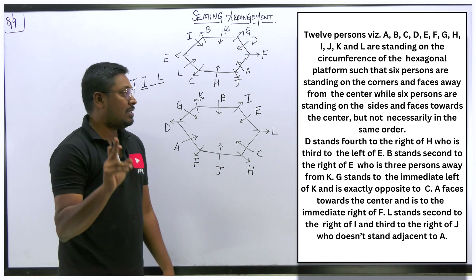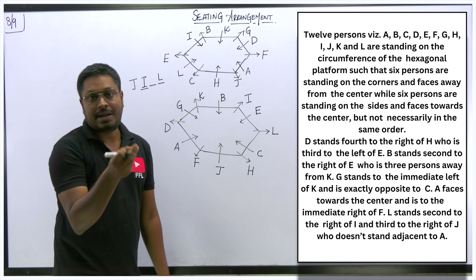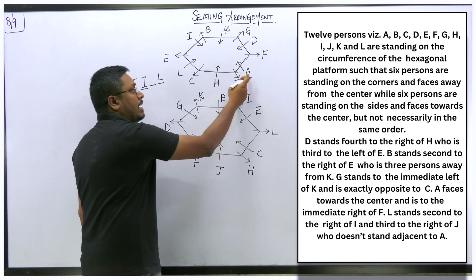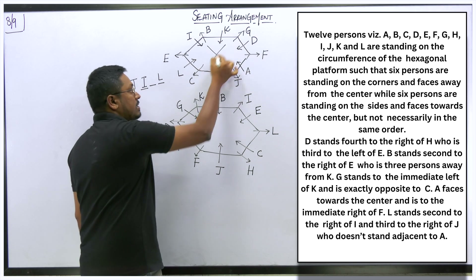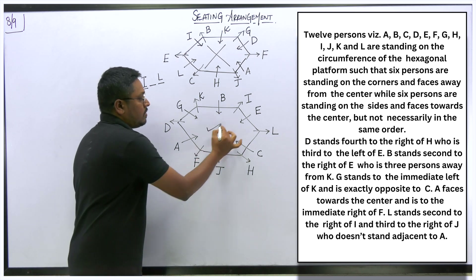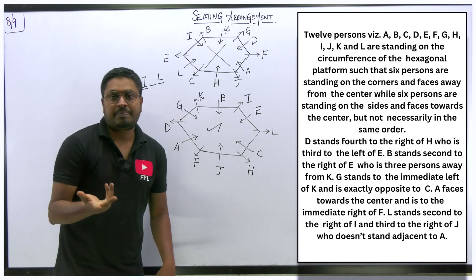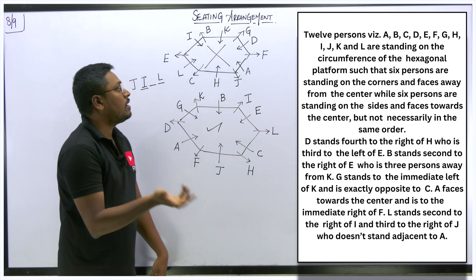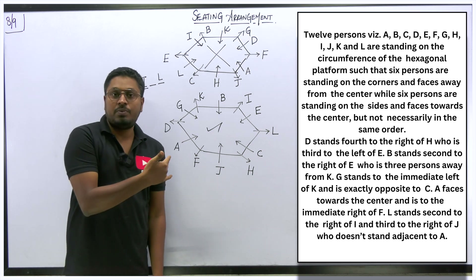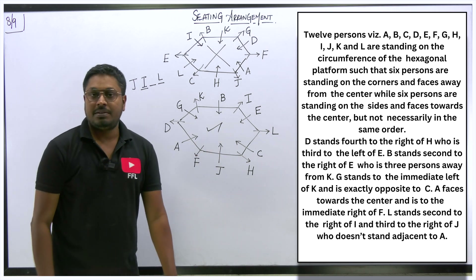Finally, we have fixed everything. The last clue: J does not stand adjacent to A. In diagram 1, A's neighbor is J — so that case is wrong. In diagram 2, A's neighbor is not J — so diagram 2 is the correct answer for this arrangement.